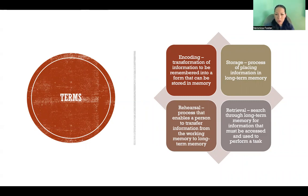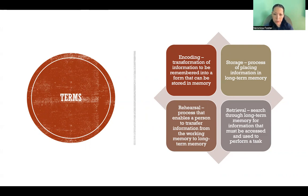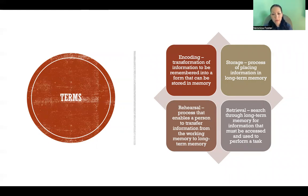Encoding refers to how information is transformed so that it can be remembered and stored in memory. Storage is the process of placing that information in long-term memory. Rehearsal is the process that enables a person to transfer information from working memory or short-term temporary memory into long-term memory. And retrieval is the process of going through our long-term memory and being able to retrieve or bring back information that was stored there.